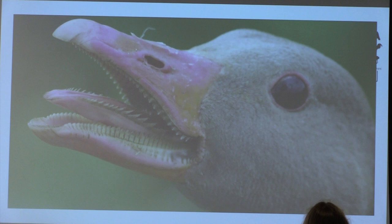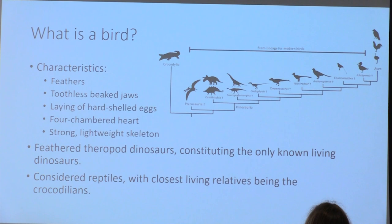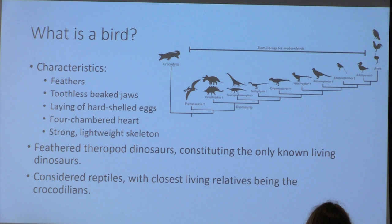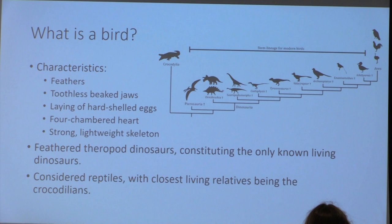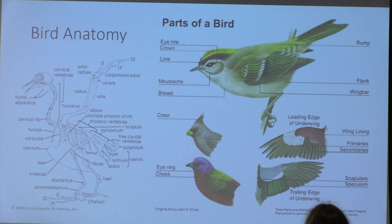Those cartilage striations function like teeth — they help break up vegetation and grip prey — but they aren't true teeth because they don't have enamel. That's a fun little fact because a lot of people think geese have teeth after being chased by one. Birds are the only known living dinosaurs; they are feathered theropods. You can see from a stem lineage diagram how dinosaurs diverged into modern birds. Their closest living relatives are crocodilians — crocodiles and their relatives. Birds also have scales on their feet and legs, which is why they are considered reptiles by some.